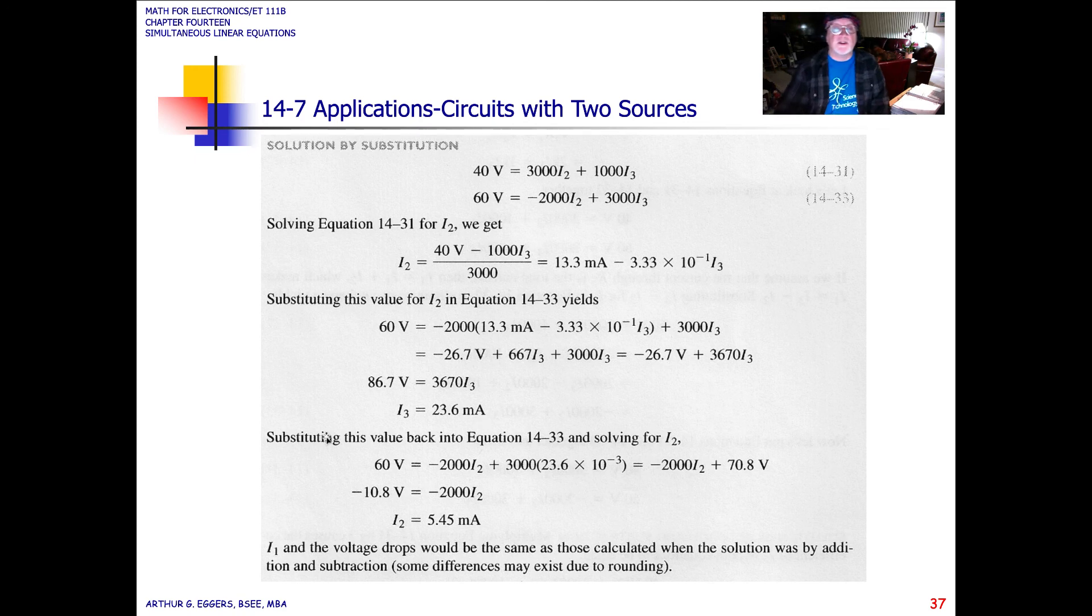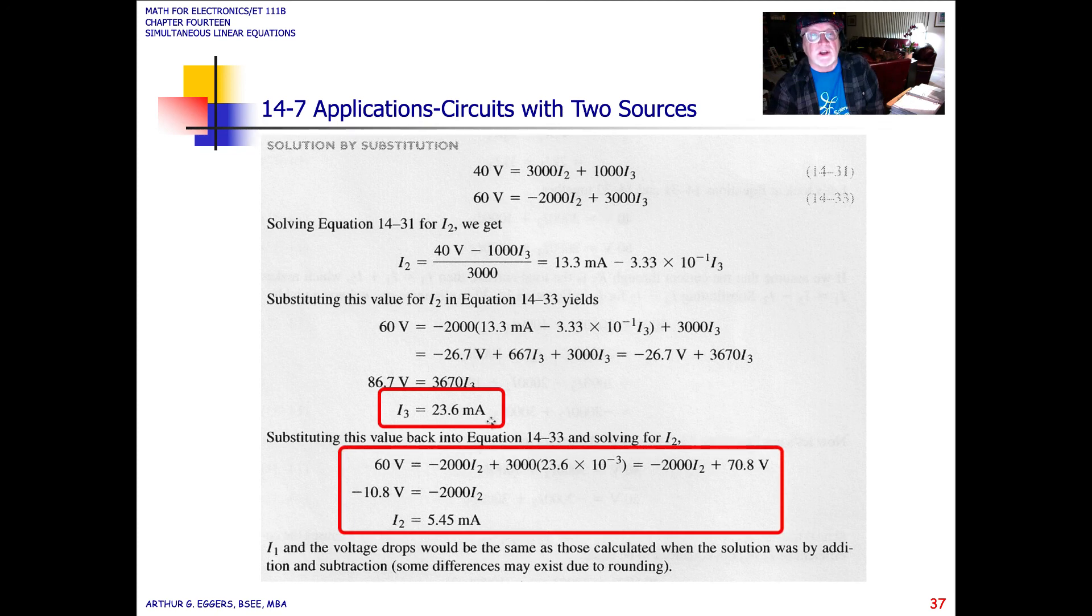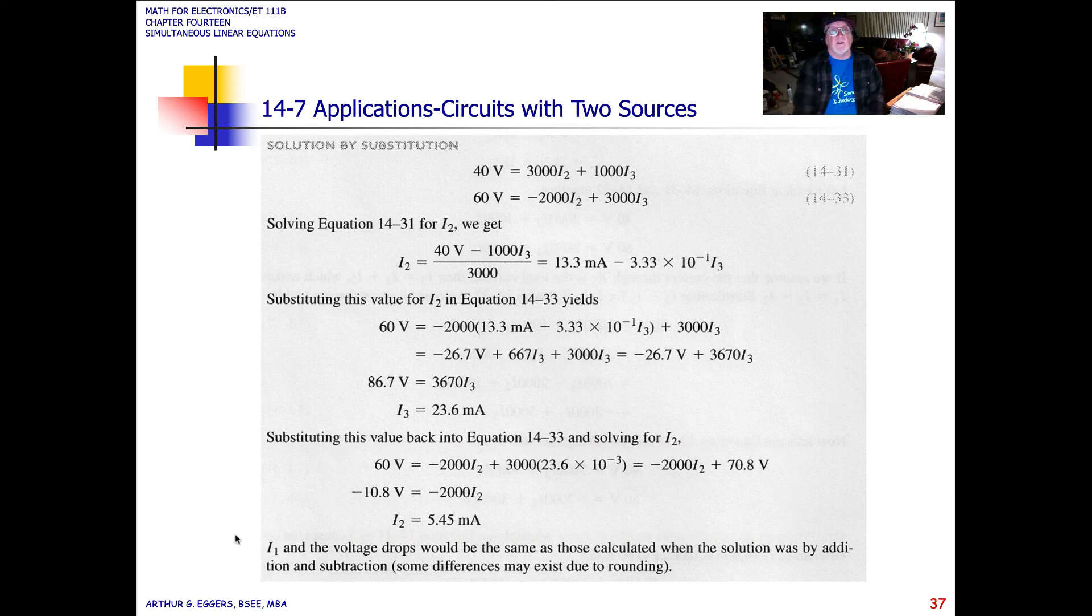Now if we substitute this value of I3 back into the second equation, that's the 60 volt equation, we have minus 2000 I2 plus 3000, make the substitution of 23.6 times 10 to the minus third or milliamps, and we get 2000 I2 in the negative plus 70.8 volts. Solving for I2 then, we end up with an I2 value of 5.54 milliamps. So I1 and the voltage drops would be the same as those that we calculated when the solution was by addition and subtraction. Again, some differences may exist due to rounding.